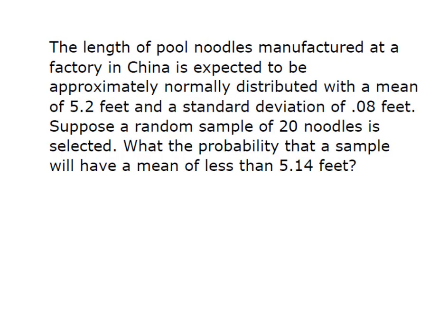So the question at hand is, we have pool noodles that are manufactured in a factory in China, and the length of the noodles is expected to be normally distributed with a mean of 5.2 feet. The standard deviation is 0.08 feet, and we take a random sample of 20 noodles. What's the probability that a sample will have a mean of less than 5.14 feet?